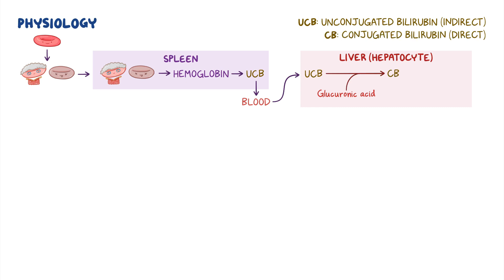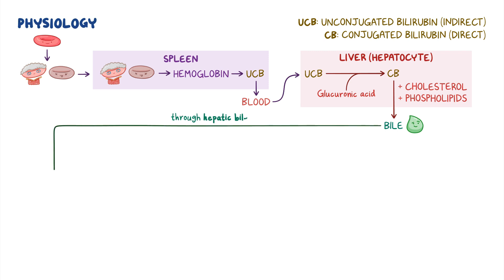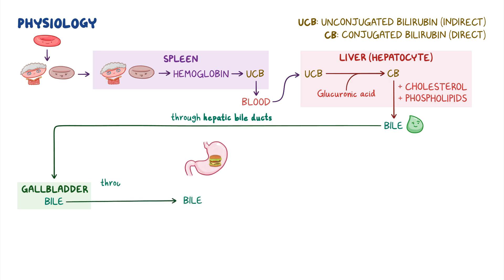The hepatocytes use this conjugated bilirubin, as well as cholesterol and phospholipids, to produce bile. Bile is secreted by the liver through the hepatic bile ducts towards the gallbladder, where it's stored. When food reaches the stomach, the gallbladder secretes bile through the cystic and common bile duct into the duodenum.